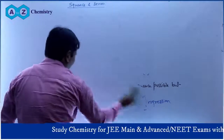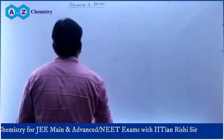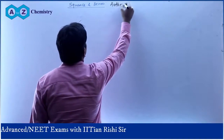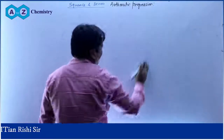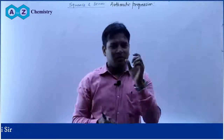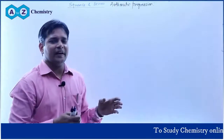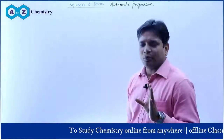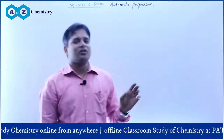We will study 3 types of progressions. In today's class we are discussing arithmetic progression. An arithmetic progression is a progression in which the difference between consecutive terms — two successive terms — is constant.